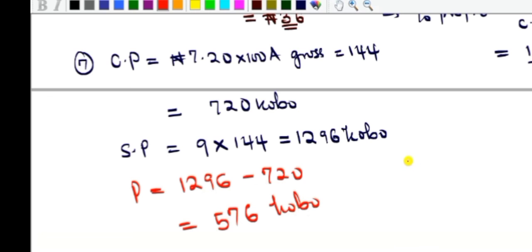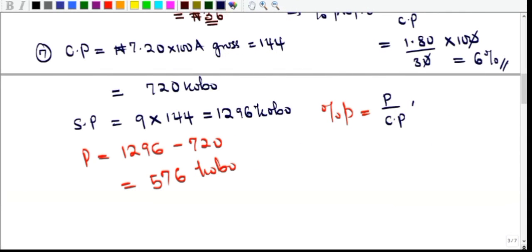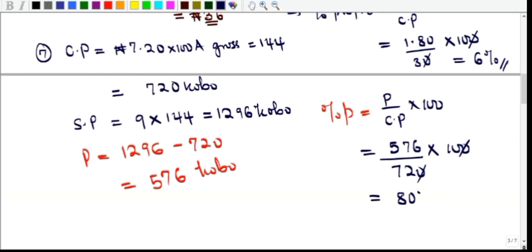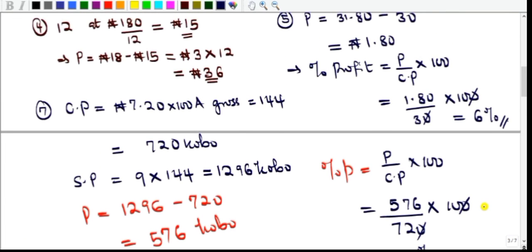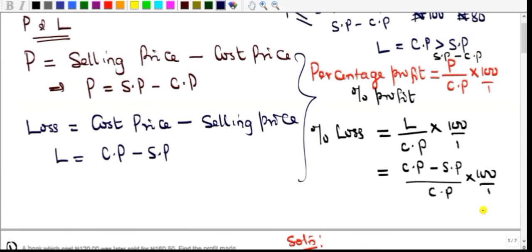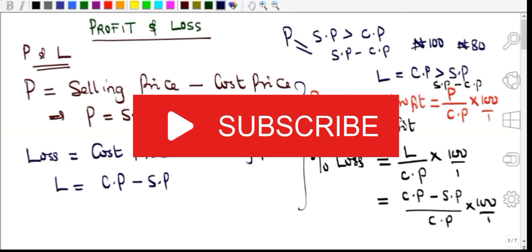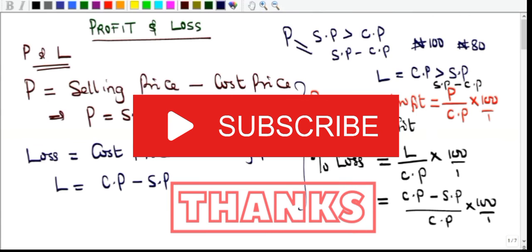Percentage profit = (576 / 720) × 100 = 80%. So the seller made a profit equal to 80% of her cost price. That is what profit and loss is all about — including percentage profit and percentage loss. Kindly subscribe, share the videos with your friends, and give a thumbs up. See you in the next one!